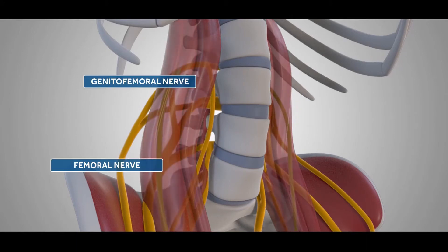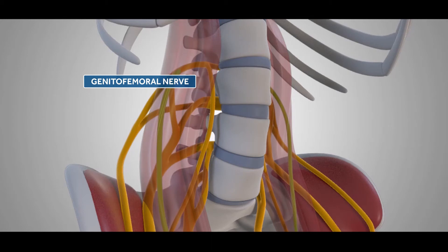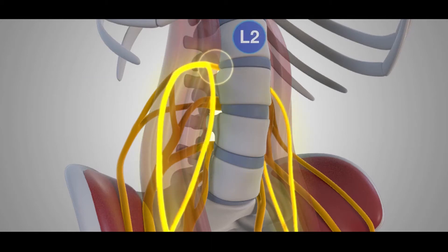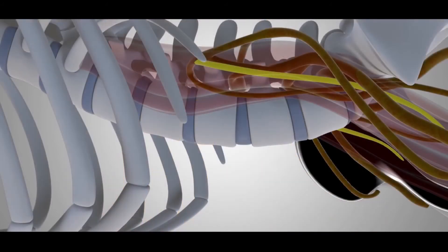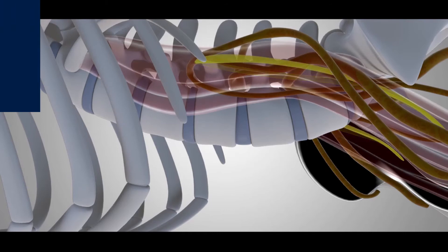The genito-femoral nerve exits the psoas muscle at approximately the L2 disc space and may be visualized during the OLIF-25 procedure. If visualized, it can be mobilized temporarily to allow for entry into the disc space.